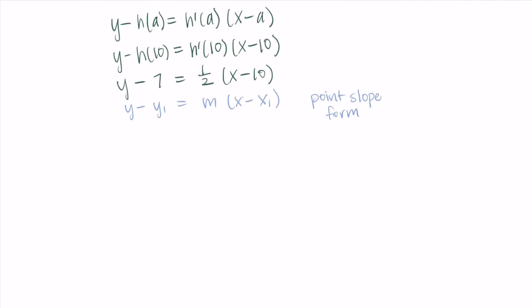So we've made great progress. Now we just need to rewrite our final version of the equation in slope-intercept form, so we just want it to be y equals. So I'm going to distribute that 1/2 into the parentheses. I'm getting 1/2x - 5. A half of 10 is 5.